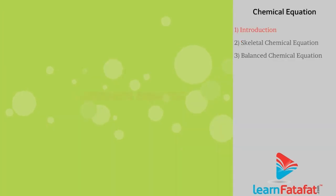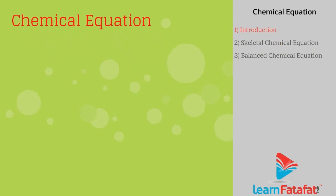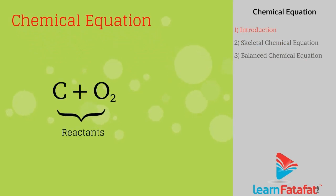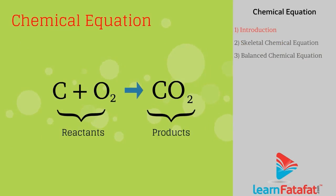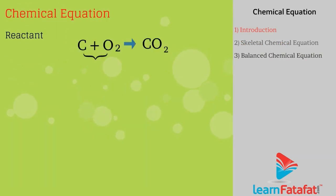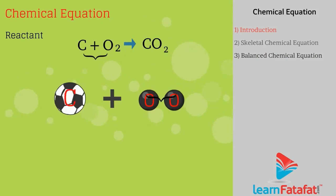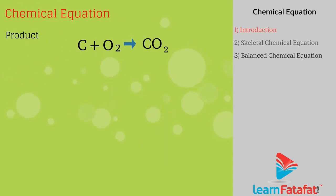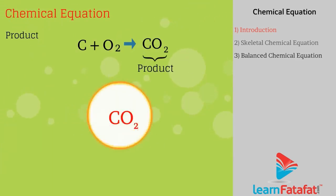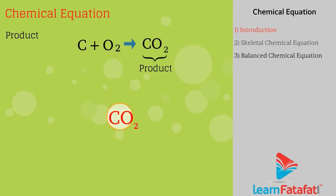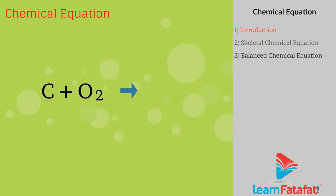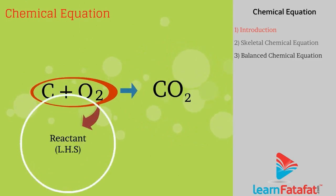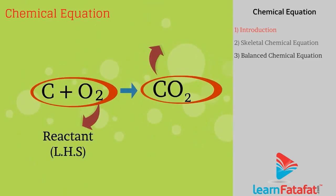A chemical equation is the symbolic representation of the physical state of reactants and products. Reactants are the substances that undergo chemical change in the reaction. Products are the substances that are formed during the reaction. In any chemical equation, reactants are on the left-hand side and products are on the right-hand side.